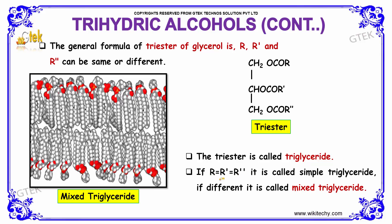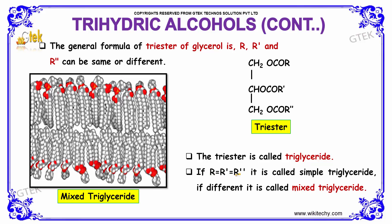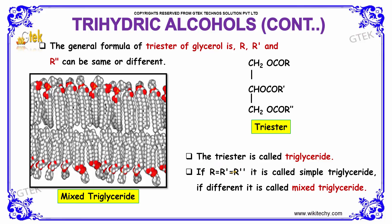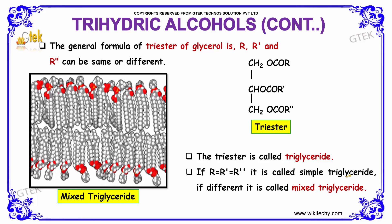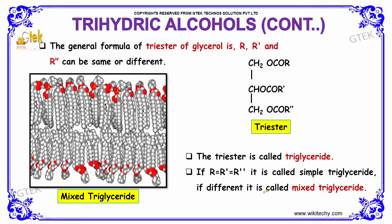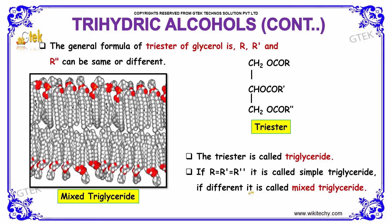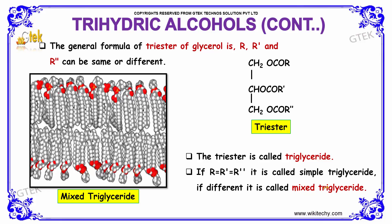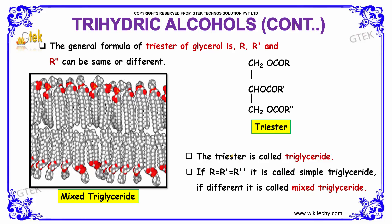If R equals R' equals R'', that is, if all three are the same alkyl or aryl groups, it is called a simple triglyceride. If they are different, it is called a mixed triglyceride.